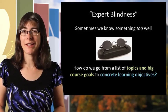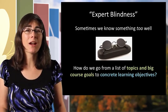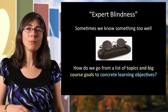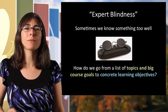So this is the idea of expert blindness. That sometimes we know something too well and it's hard to remember how we learned it. So what are some strategies for going from our list of topics on our syllabus to creating some concrete learning objectives?